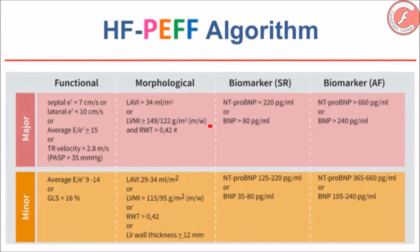We must know that, just like the ejection fraction, the alterations of diastolic function and the pro-BNP have a fluctuating character over time, usually appear late, and moreover can be altered by independent phenomena such as transmitral flow or the myocardial relaxation. This is why the speckle tracking constitutes an interesting tool, because the reduction of the ventricular strain, or even the atrial strain, can be identified before ventricular filling pressures increase or the left atrium dilates.